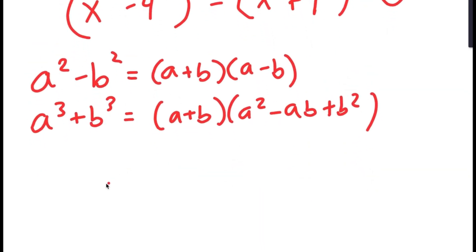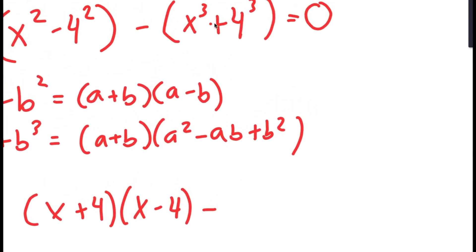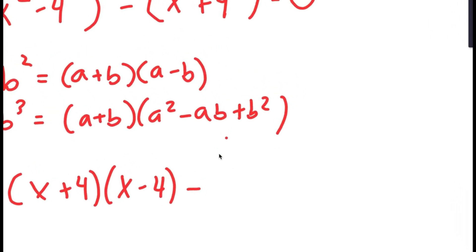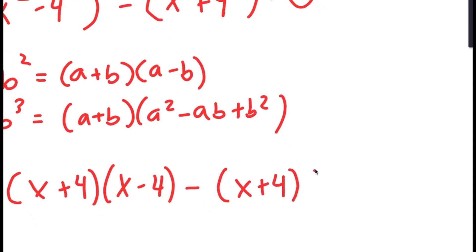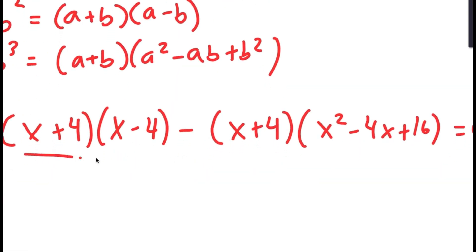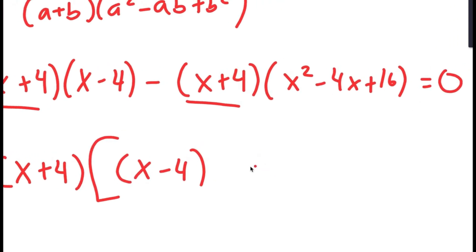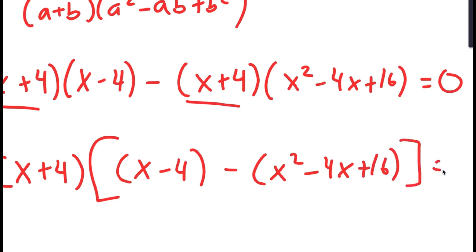So for x squared minus 4 squared, it turns into (x + 4)(x − 4). And for minus x cubed plus 4 cubed, which is x cubed plus 4 cubed, it turns into (x + 4)(x squared minus 4x plus 16). Because both terms have (x + 4), I can factor that out, giving (x + 4) times [(x − 4) minus (x squared minus 4x plus 16)] equals 0.